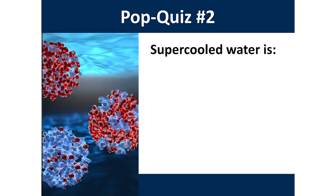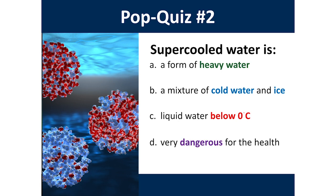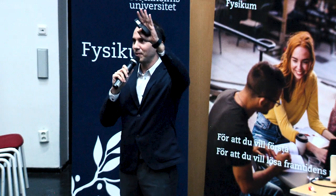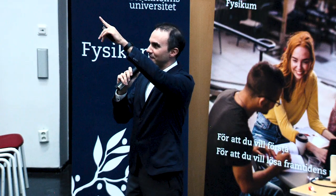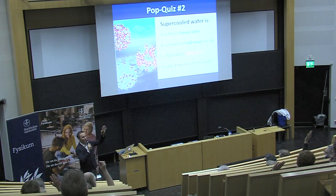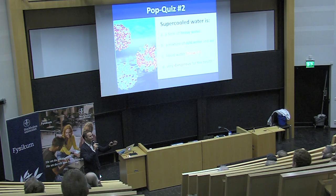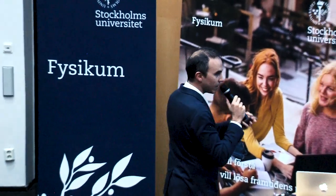Pop quiz number two. Supercooled water is: A, a form of heavy water; B, a mixture of cold water and ice; C, liquid water below zero Celsius; or D, very dangerous for your health. Who thinks A? Nobody — oh, one person. Who thinks B? Another person. How about C? A lot of people seem to know that this is probably the correct answer. And D? At least one person. Before I give you the answer, we will do a demonstration here and see for ourselves which is the right answer.